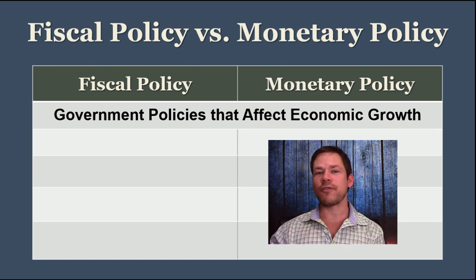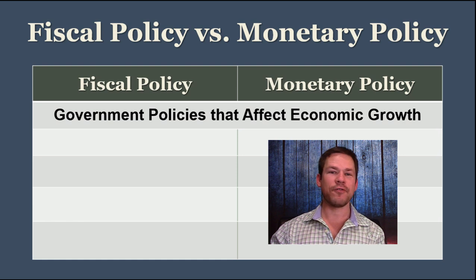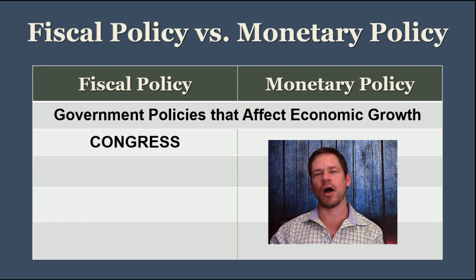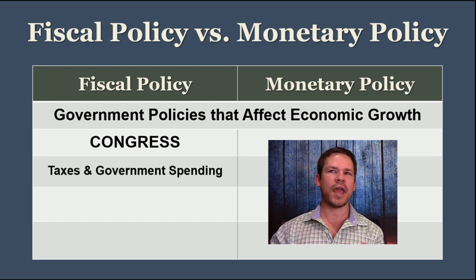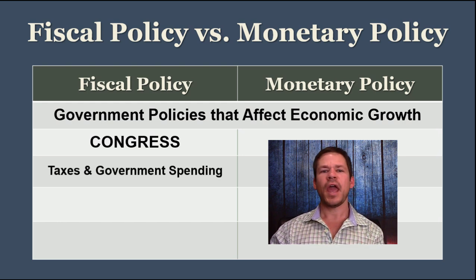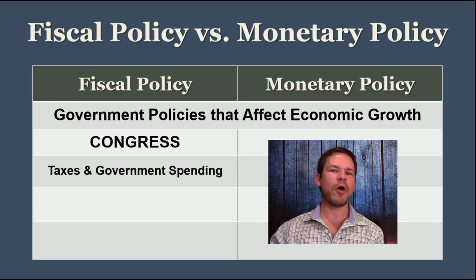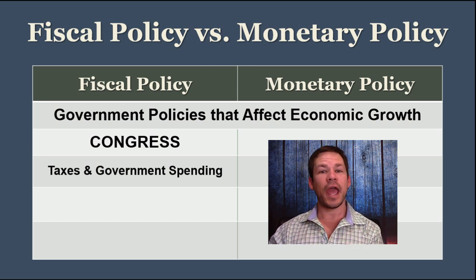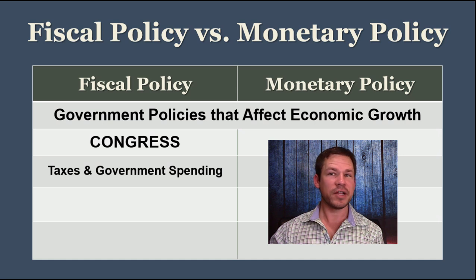First of all, let's talk about fiscal policy. Fiscal policy is set by Congress, and fiscal policy has to do with taxes and government spending. Those are the two things governed by fiscal policy — basically when we think about taxation and the budget.